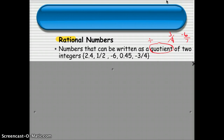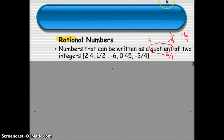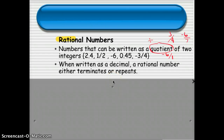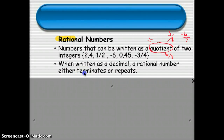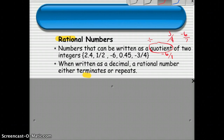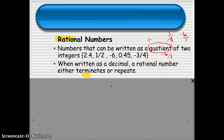Examples of rational numbers include 2.4, one half, negative 6 (which could be written as negative 6 over 1), 0.45 (which you could write as 9 twentieths), or negative 3 fourths. Most people do a little better when they look at the decimal form of a number. If a number is rational, it always does one of two things: it either terminates — think of the terminator, it ends — or it repeats. So your number is always going to end or repeat.